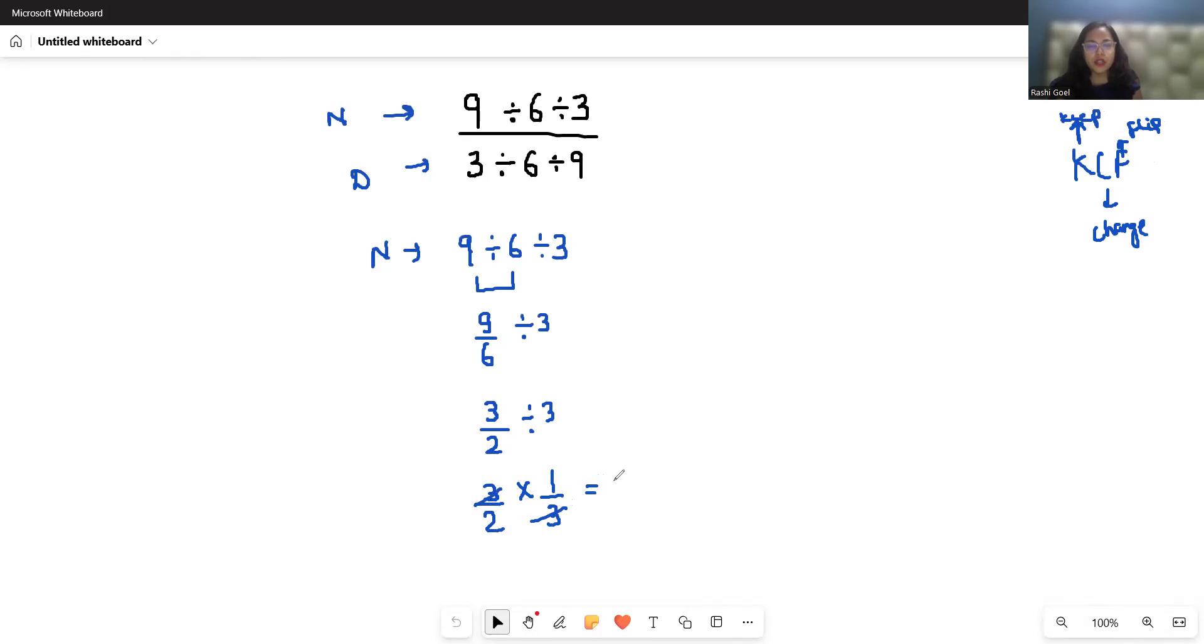Now denominator: 3 divided by 6 divided by 9. So 3 divided by 6 divided by 9, this gives us 1 by 2 divided by 9. Again I'm following the KCF rule, so keep it, change the sign, and flip it.